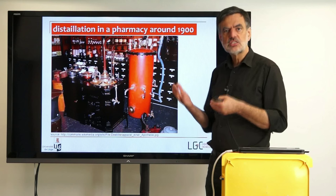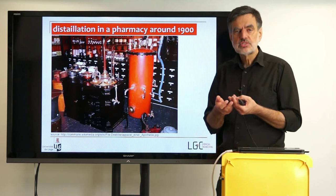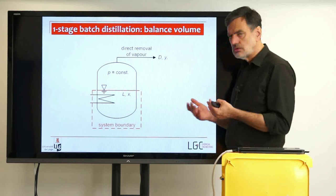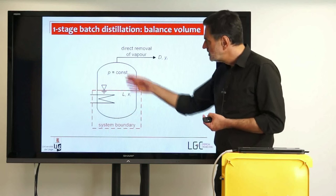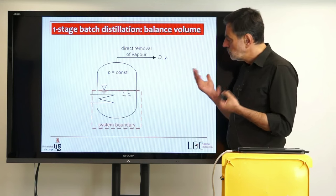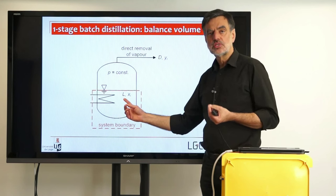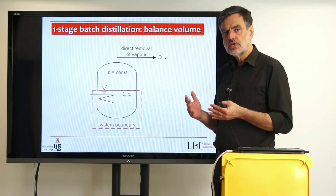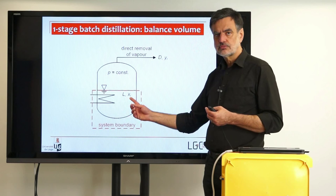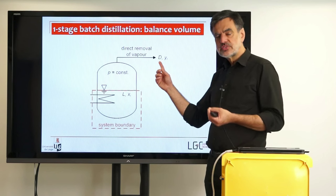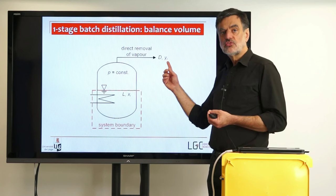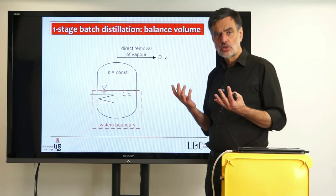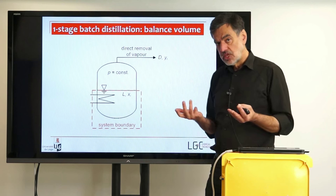Now, before we want to set up the balances, we first have to define those variables that we want to use. The amount of liquid is L, the concentration is described by Xi — the mole fraction. For the distillate, we have the amount of substance D, and the mole fraction of the vapor is Yi. I refers to the individual component, so that's the mole fraction of component I. If you have alcohol and water, you have two components, so you have a Y1 and a Y2. They have to sum up to unity, as you know.